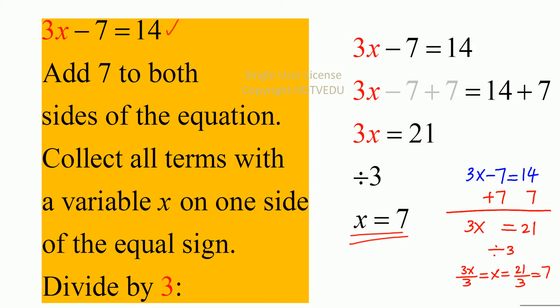So 3x minus 7 is equal to 14. Add 7 to both sides of the equation. Collect all terms with the variable x on one side of the equal sign. Divide by 3.